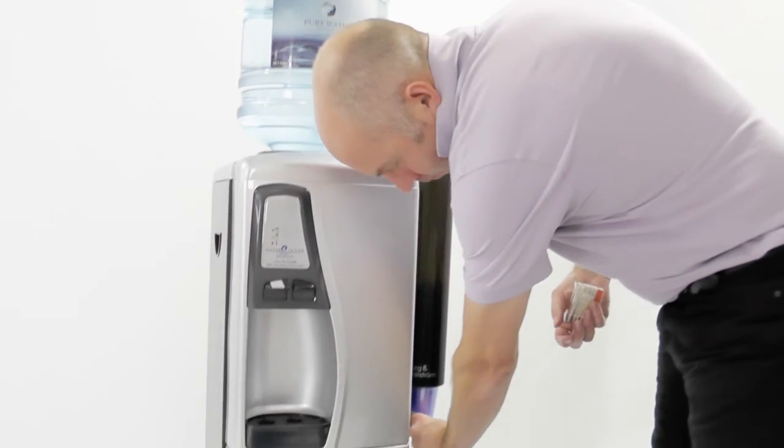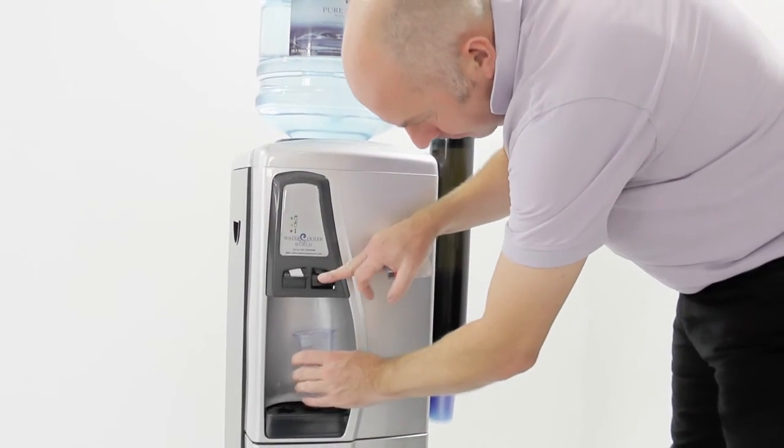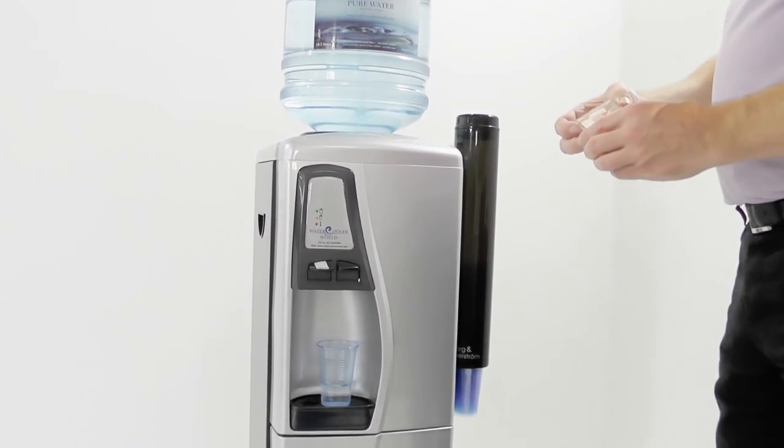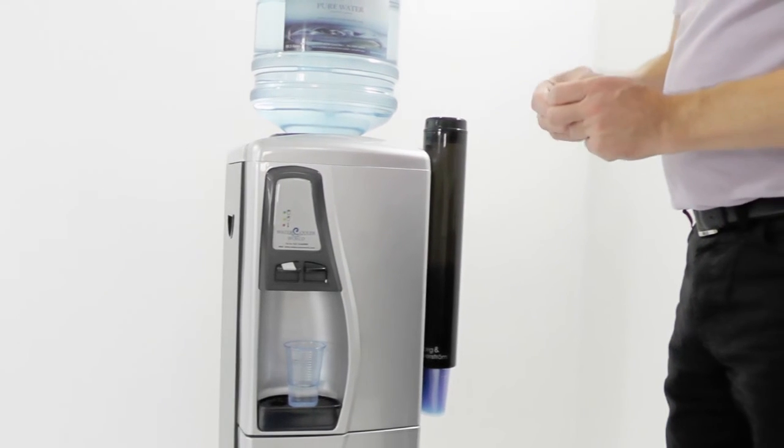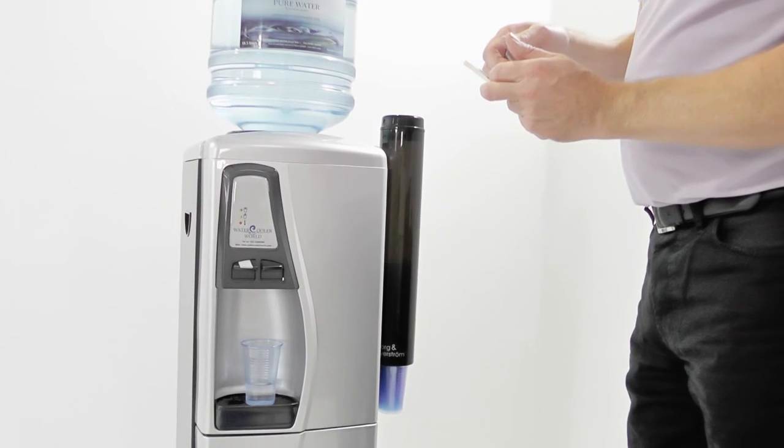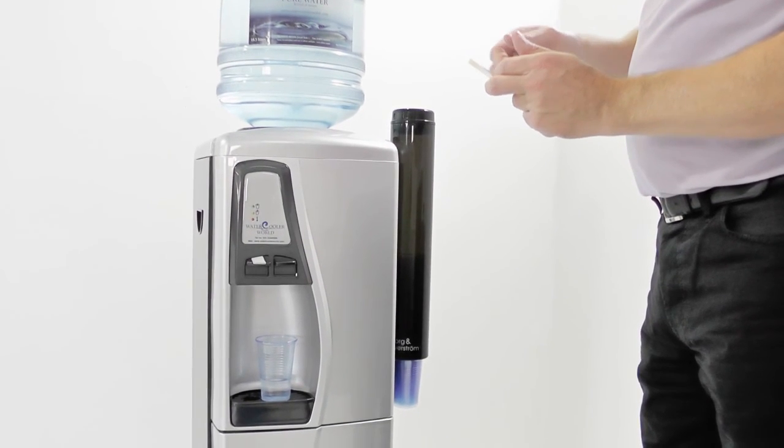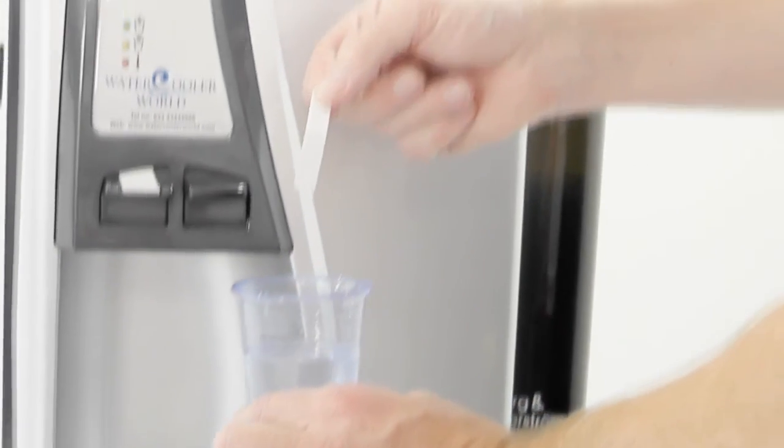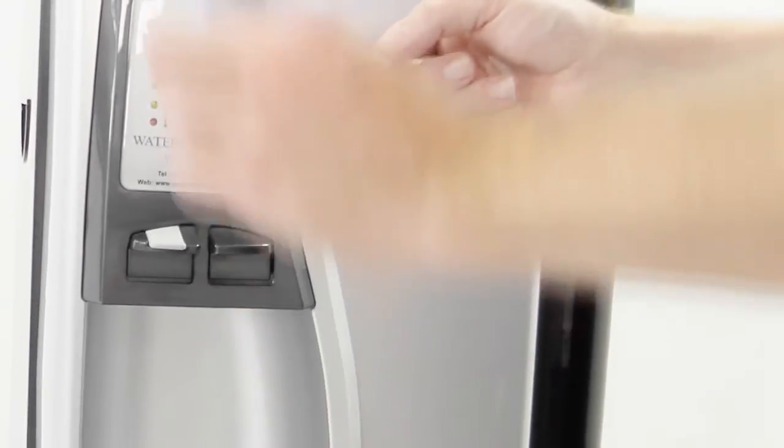Okay. Take a glass of water. Use a test strip to make sure there's no peroxide left in the machine. Okay. That's clear. No peroxide. Ready to drink.